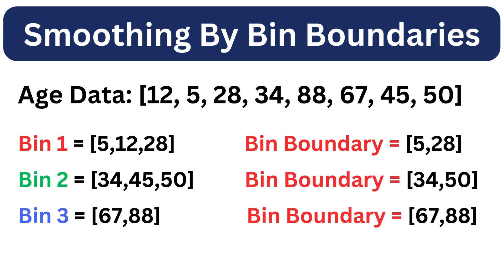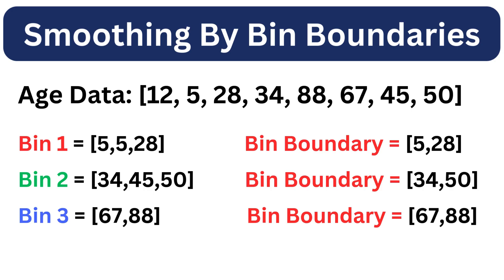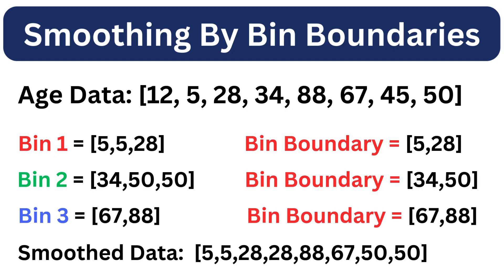Now let's discuss smoothing by bin boundaries. In this method, we take the highest and lowest values from each bin and refer to them as boundaries. We then compare all elements between these boundaries with the boundary elements and check which boundary they are closer to. For example, the difference between 5 and 12 is less than the difference between 12 and 28, so 12 is closer to the boundary 5, and we replace 12 by 5. Similarly, for the second bin, 45 is closer to 50 rather than 34, so we replace 45 by 50. The third bin remains as it is. Here is the data after applying smoothing by bin boundaries.